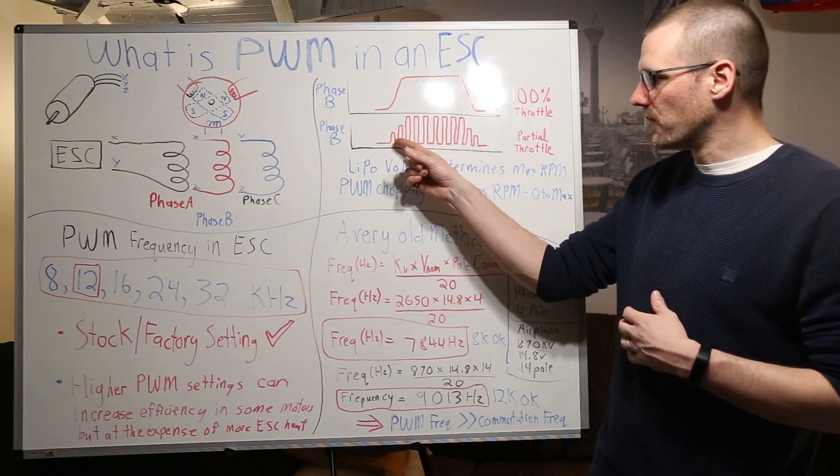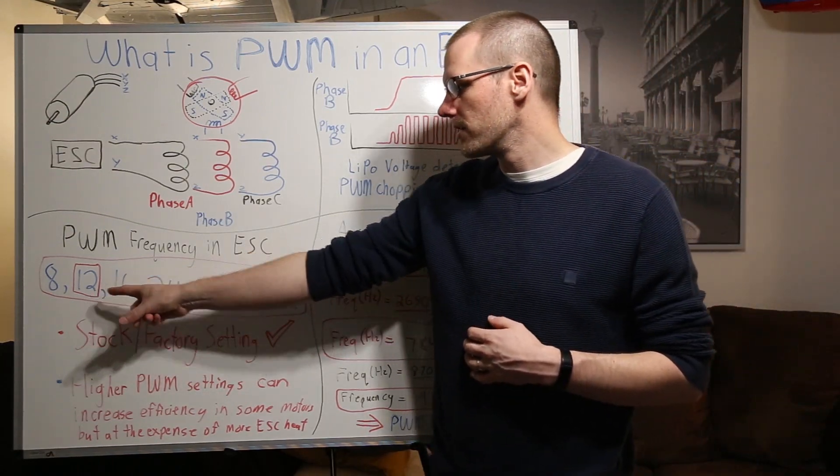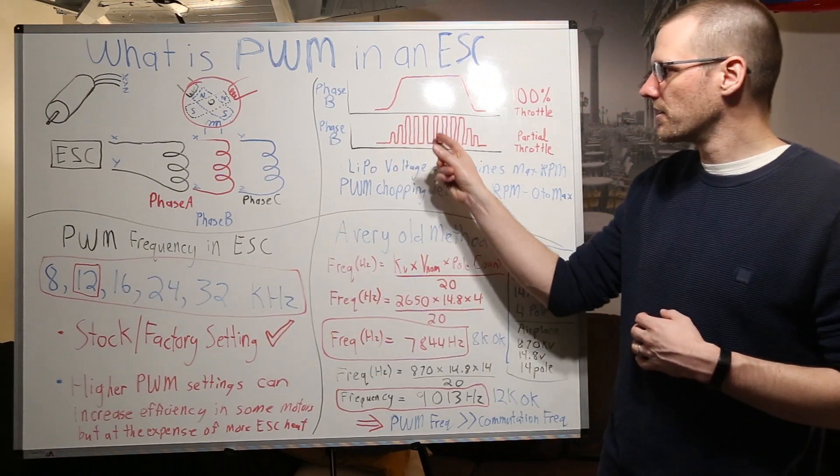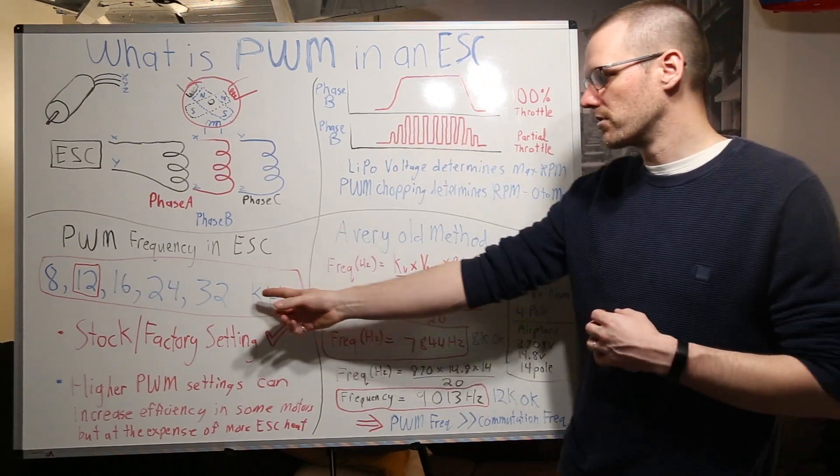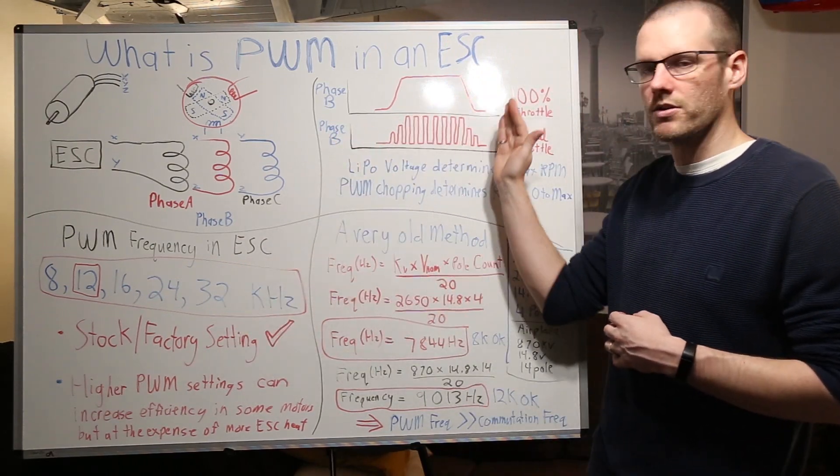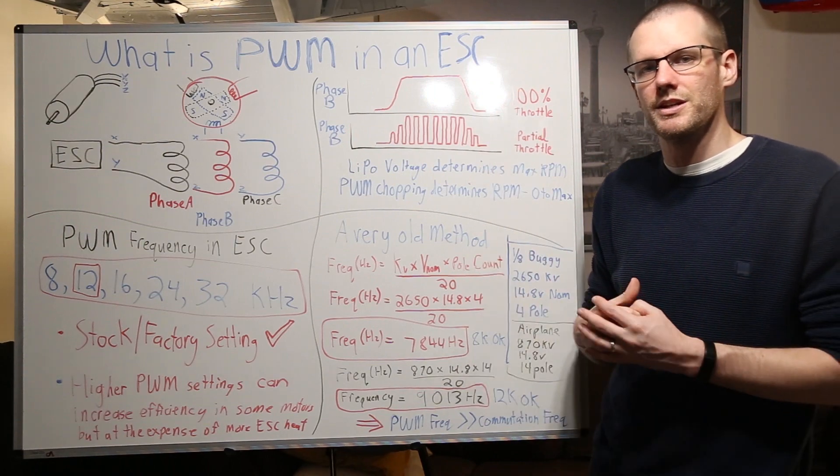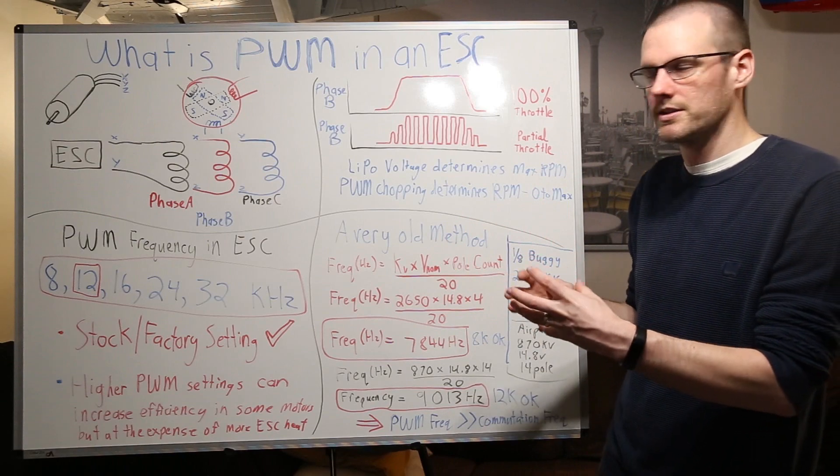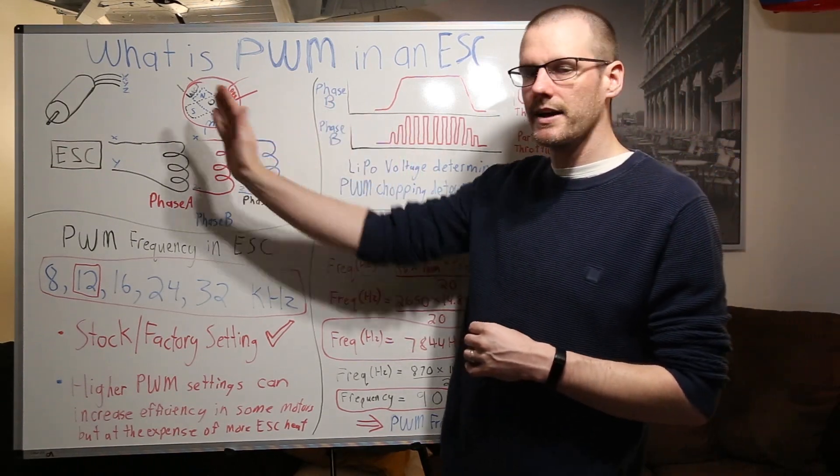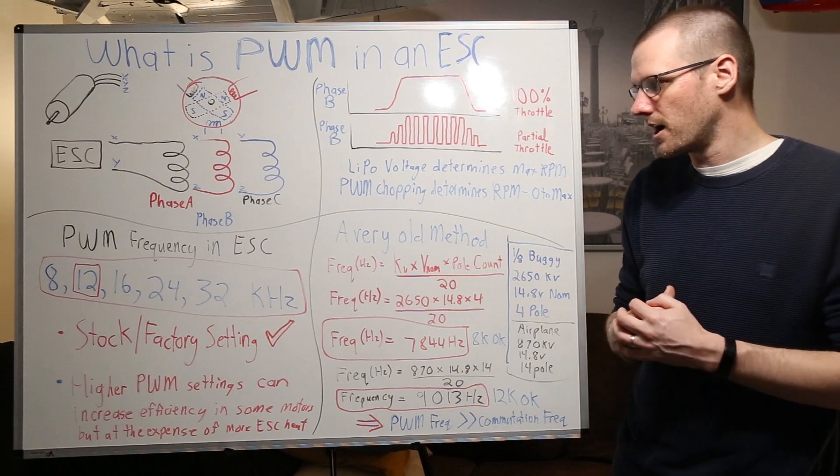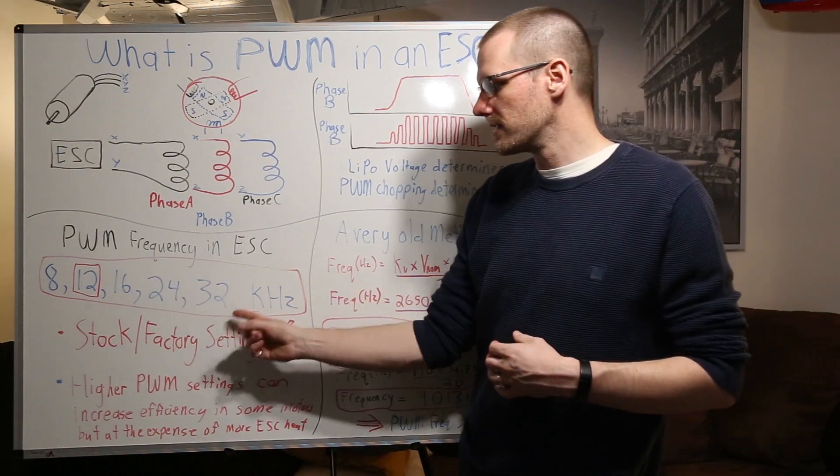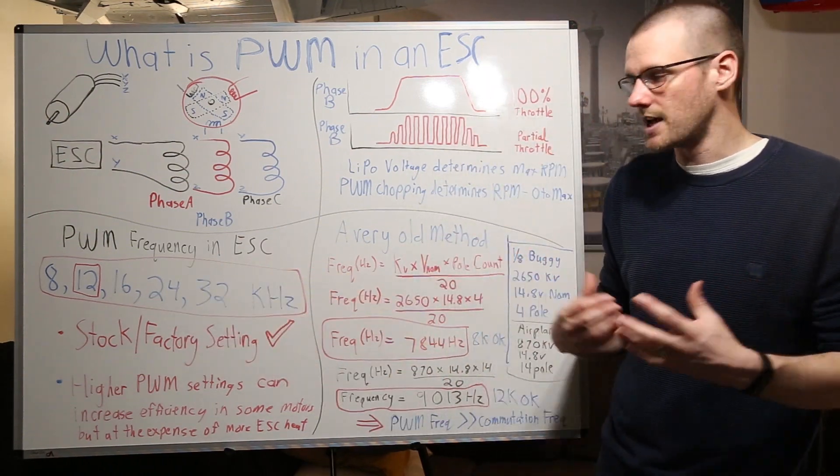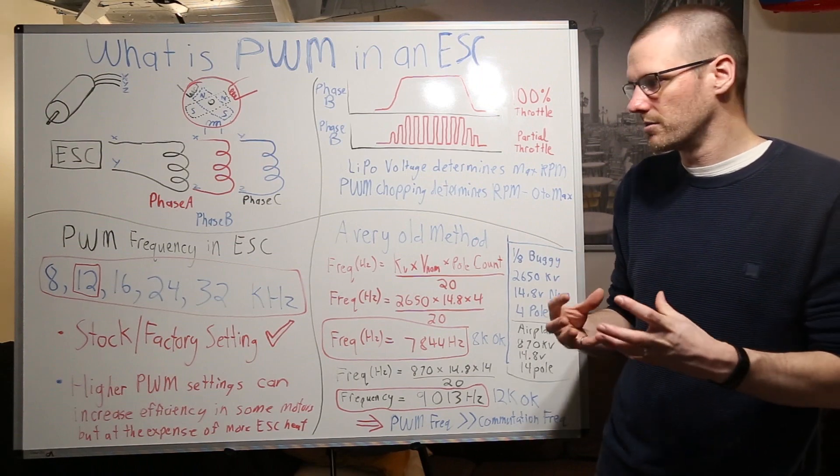So that means the more times that you have to go for example if we're looking and comparing 12 versus 32 if this represents 12 when you jump to 32 you're going to have a lot more vertical lines to deal with. That speed control is going to need to switch the power on and off to one particular phase. It does it through all the phases but you know imagining one at a time it has to do it multiple times in a second. This is the amount of times that it's doing it within a second. So you can imagine it's an extremely high rate.